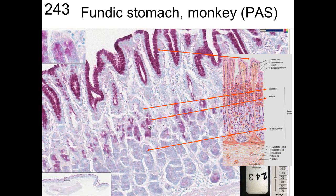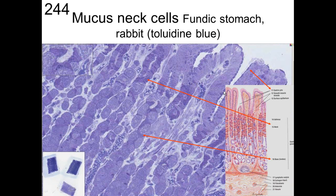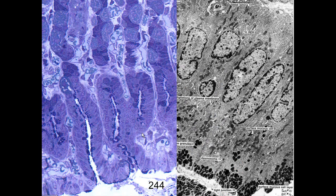Looking further at the stomach, we see surface mucus cells and the branched tubular gastric glands. The surface mucus cells show mucus components on the surface. Parietal cells are visible with many mitochondria and a lighter space — the secretory canaliculus. At higher magnification with electron microscopy, the surface mucus cells are simple columnar cells with mucus secretions at the surface, visible at both the EM and light microscopic levels.